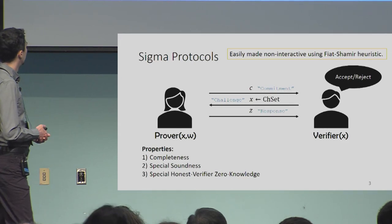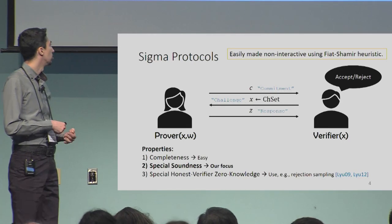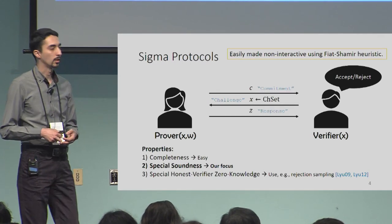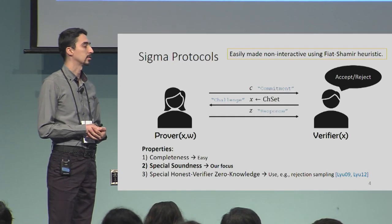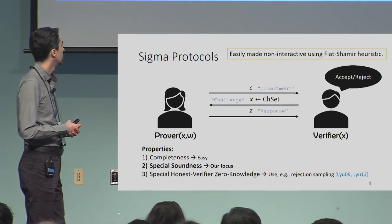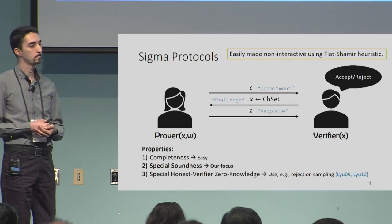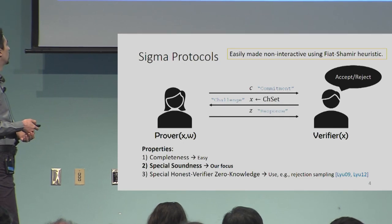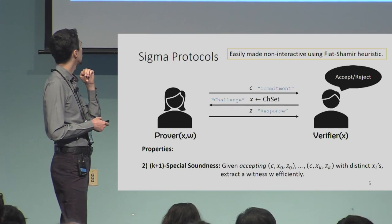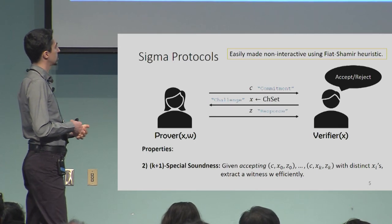Completeness is quite easy to satisfy, and for the zero-knowledge property in the lattice-based crypto setting, we have standard techniques like rejection sampling. The particular property we focus on is soundness. This will be parametrized by some variable k, and we will call it k-plus-one special soundness.